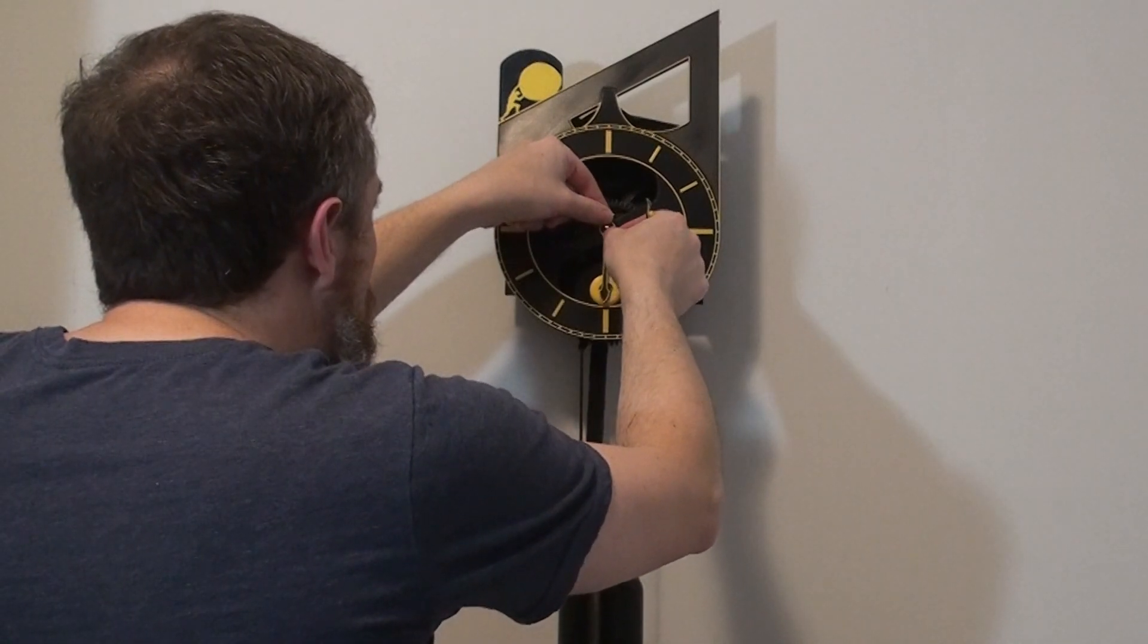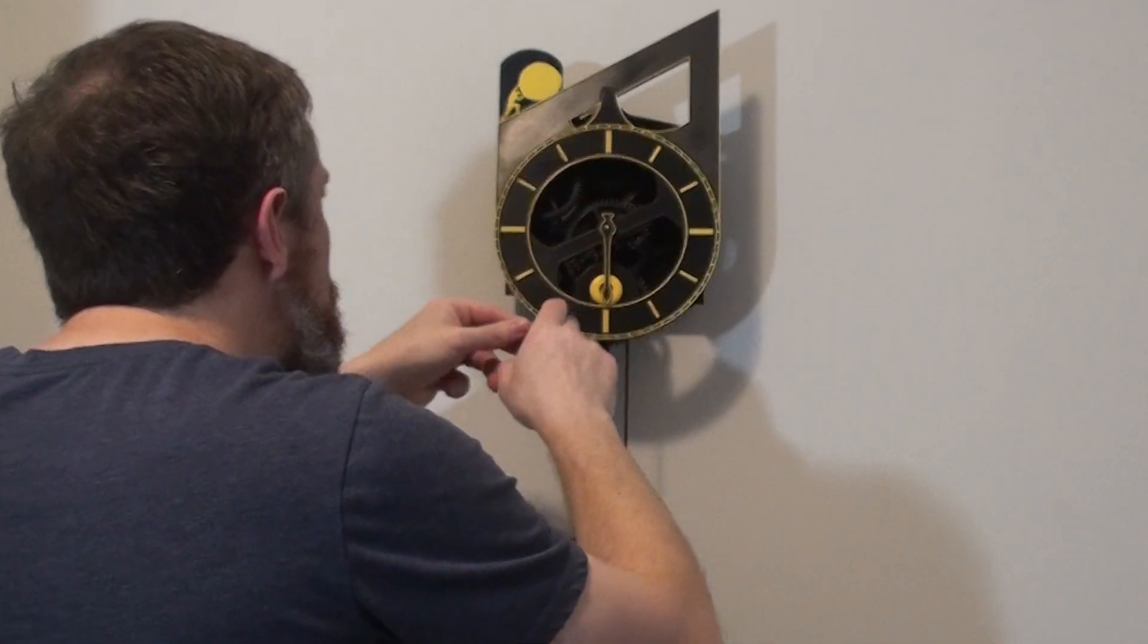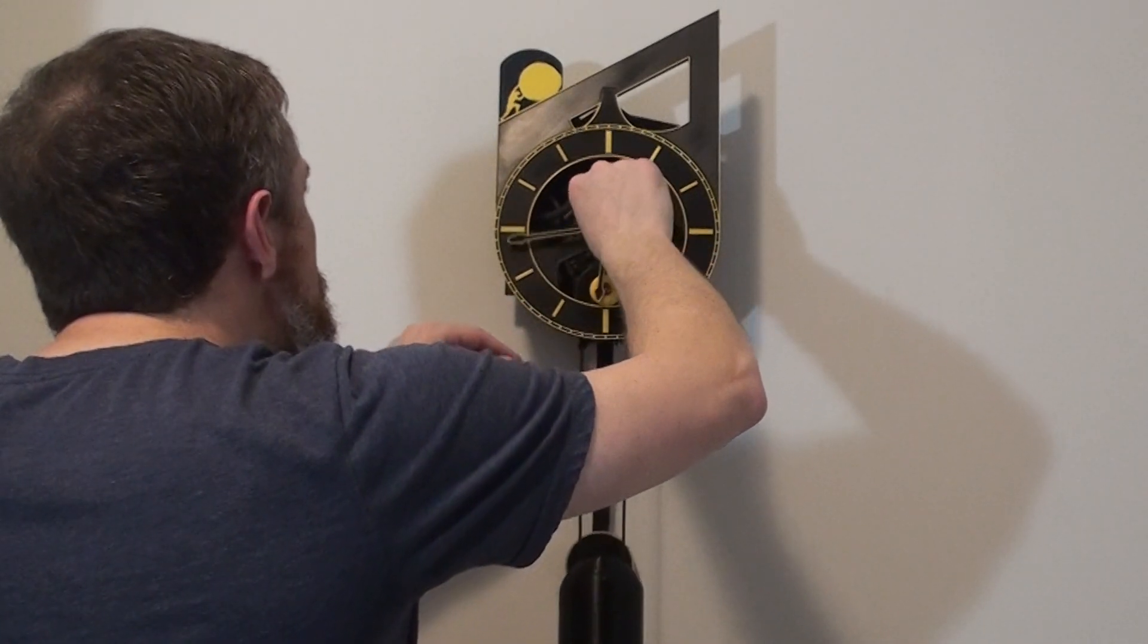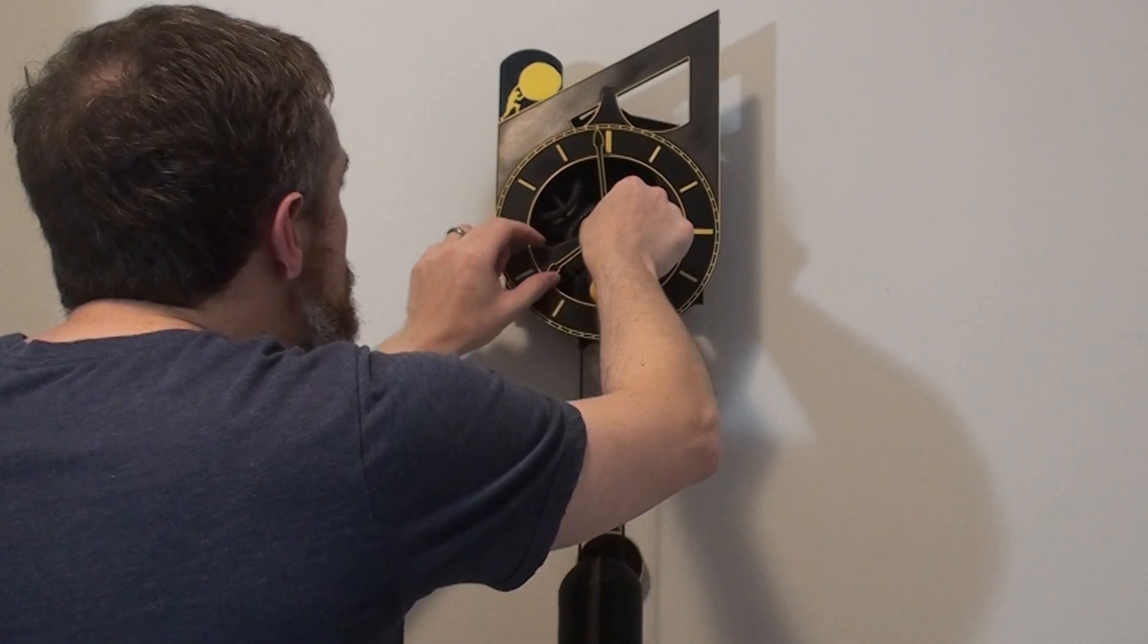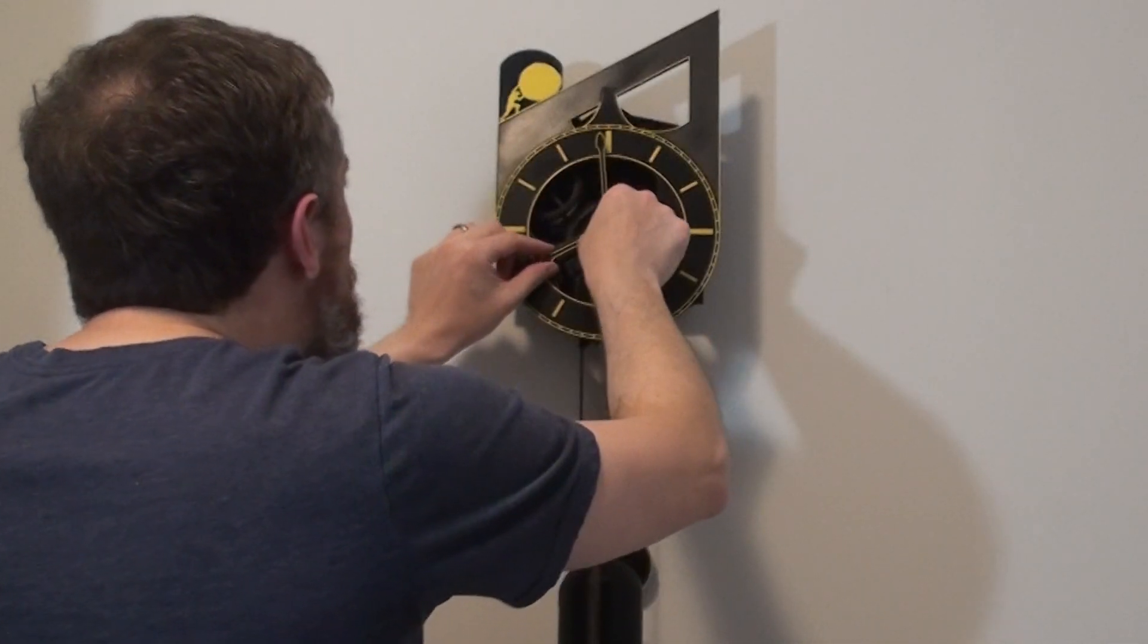You can adjust the clock side to side to get the beat to be even. You want to try to get the space between the tick and the tock as even as possible. Put the hour hand loosely in place, followed by the minute hand. I wanted my Sisyphus to start climbing around 8 so I moved the minute hand until it was on the 12. I then put the hour hand facing the 8.